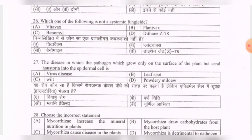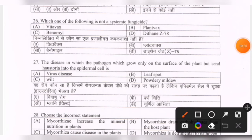Next question: which one of the following is not a systemic fungicide? Options are Vitavax, Plantvax, Vimol, Dithane Z-78. The correct option is the fourth one — Dithane Z-78.